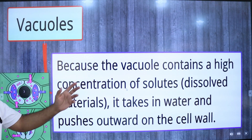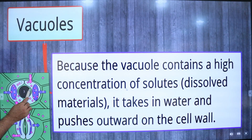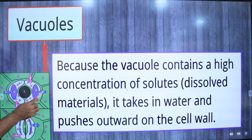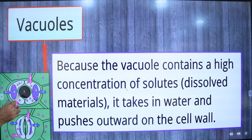The vacuole contains a high concentration of solutes, so it takes in water and pushes outward on the cell wall. As we can see in this diagram, there are two bean-shaped guard cells surrounded by epidermal cells. Guard cells are modified epidermal cells. When the guard cells are fully turgid, a small opening appears in the middle which is called a stoma.